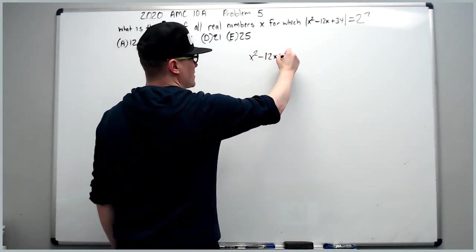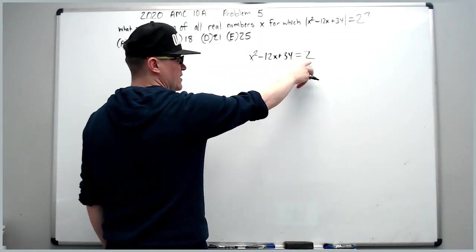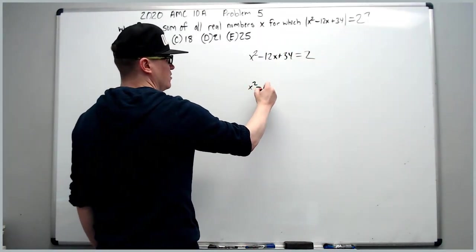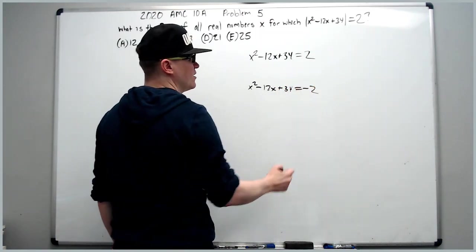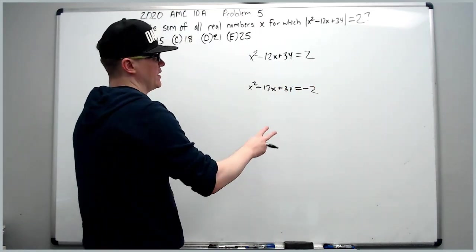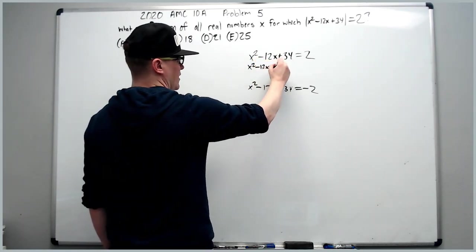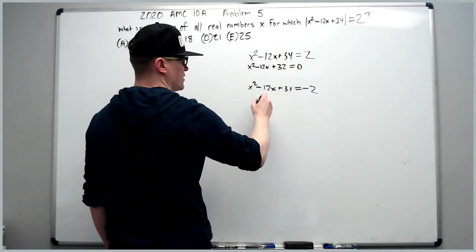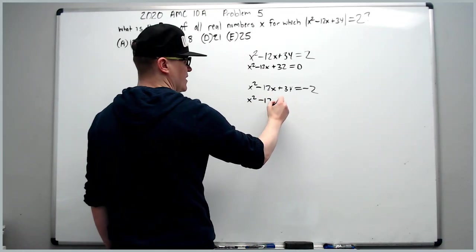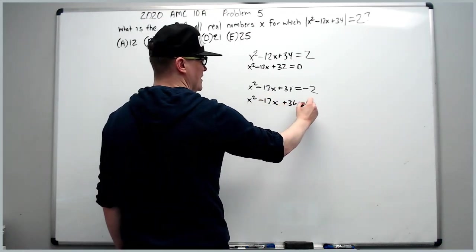Immediately pull off the absolute values, and make it 12x plus 34 equals positive 2, and also, negative 12x plus 34 equals negative 2. Then you're just simply going to move the 2 over, x squared minus 12x plus 32 equals 0, and x squared minus 12x plus 36 equals 0.